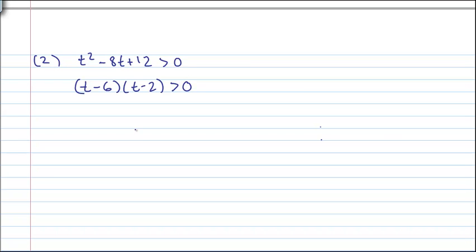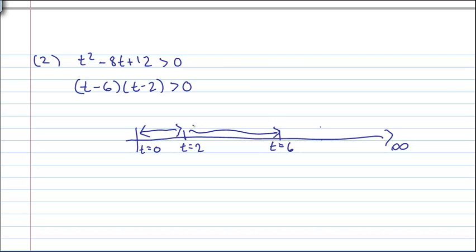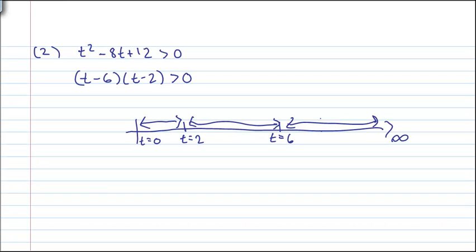So if I draw a number line, this is t equals 0. This would be t equals 2. This would be t equals 6. And this approaches infinity. On this interval, our velocity will all have the same sign. As it will on this interval. And it will also on this interval. We need to find what our velocity is on each interval here.